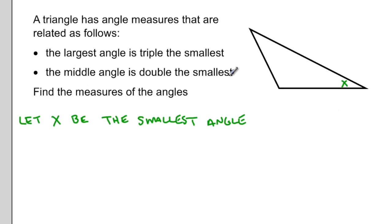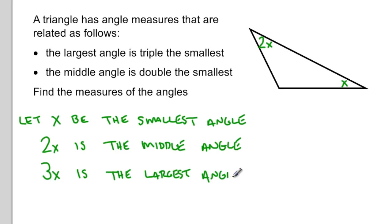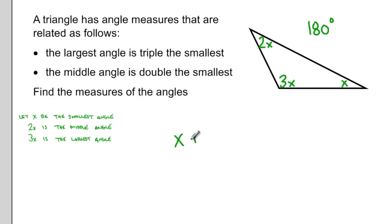Working up: the middle angle is double the smallest angle, so 2x would represent the middle angle. The largest angle is triple the smallest, so I could represent that as 3x. We should also remember that if we add all of the angles up inside a triangle, they equal 180 degrees. That lets me determine an equation: x plus 2x plus 3x has to equal 180 degrees.